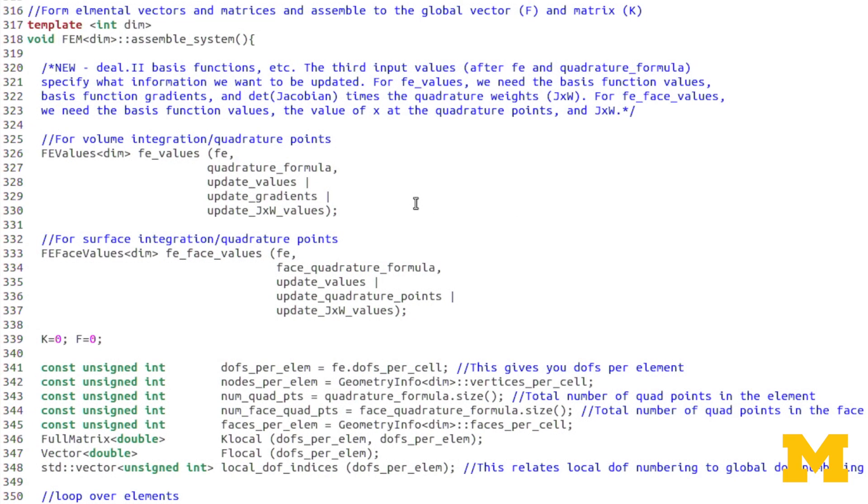You'll notice first off we have two new objects. We have this FE values and FE face values. These objects are DL2 objects that hold information about the basis functions, the basis function gradients, information about the quadrature points, the Jacobians, and all this. So we no longer have to calculate the Jacobians. We don't have to write out the basis functions themselves. We don't have to write out the quadrature points. It does all that for us.